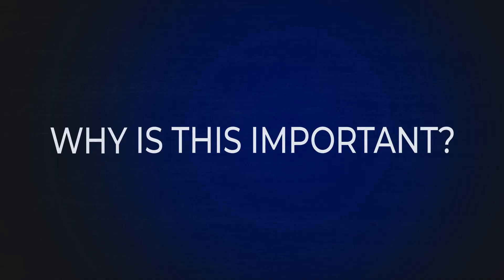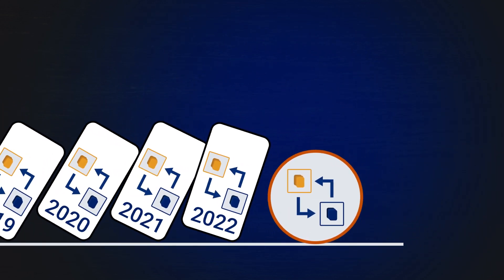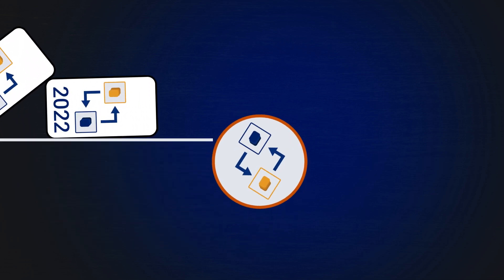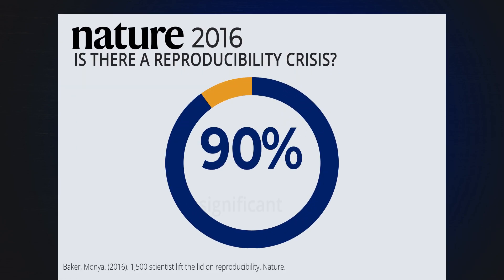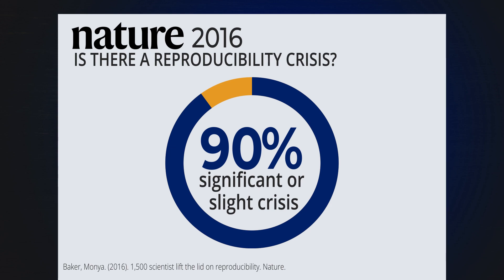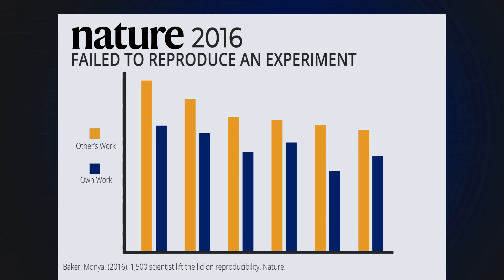So why is this important? There have been numerous studies over the past decade that have found that scientific findings are not as reproducible or replicable as we would like, which has led some to say science has a reproducibility crisis. A Nature survey published in 2016 asked scientists if they thought there was a crisis, and around 90% indicated they thought there was either a significant or a slight crisis. Even more notable were the high number of scientists that indicated they had failed to reproduce either their own or someone else's results.